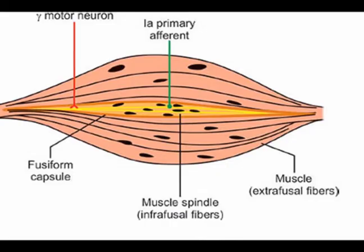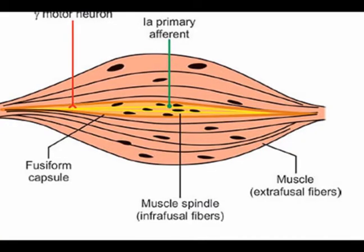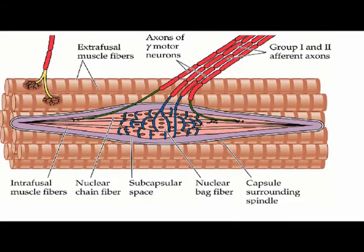A stretch or change in length of extrafusal fibers results in the stretch of intrafusal fibers, which is then detected in the equatorial and polar regions of the muscle spindle.